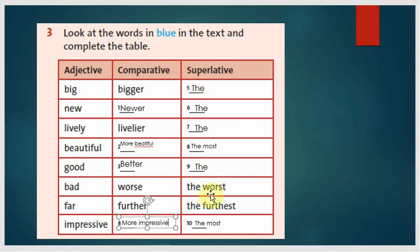More impressive, and superlative forms: big, bigger, the biggest. The next one, newer, the newest. Lively, livelier, the liveliest. Next, beautiful, more beautiful, the most beautiful. Next, good, better, the best. Bad, worse, the worst. Far, further, the furthest. Impressive, more impressive, the most impressive.